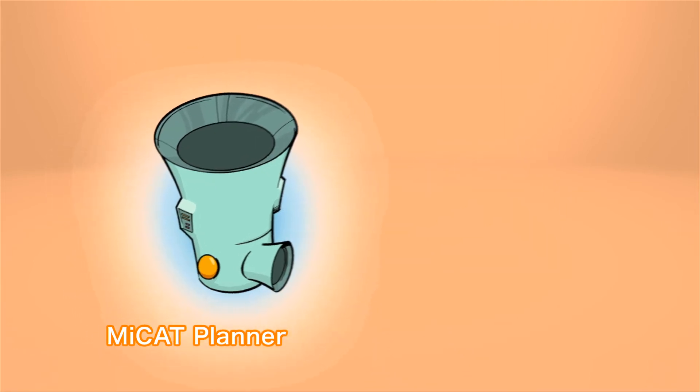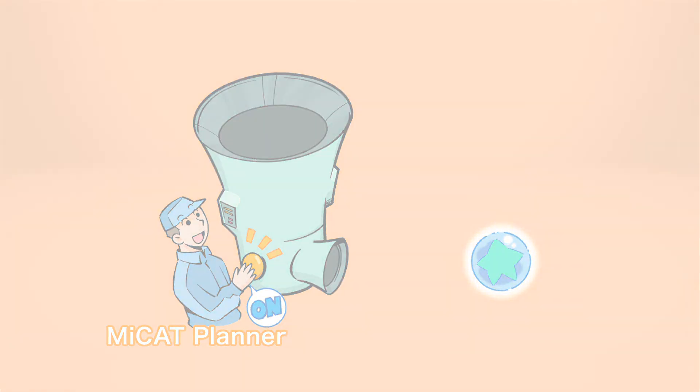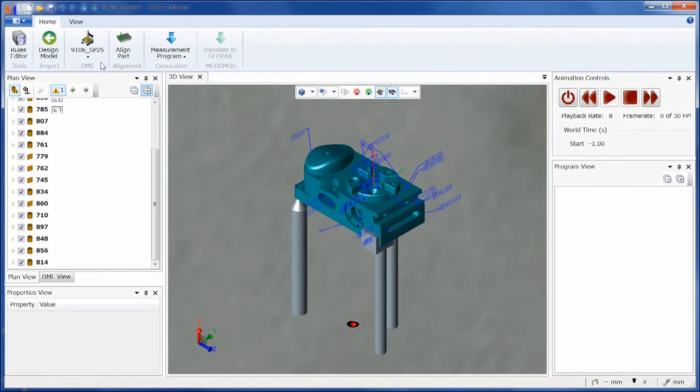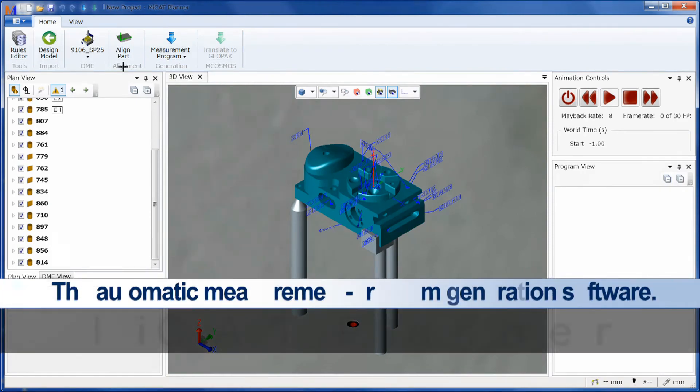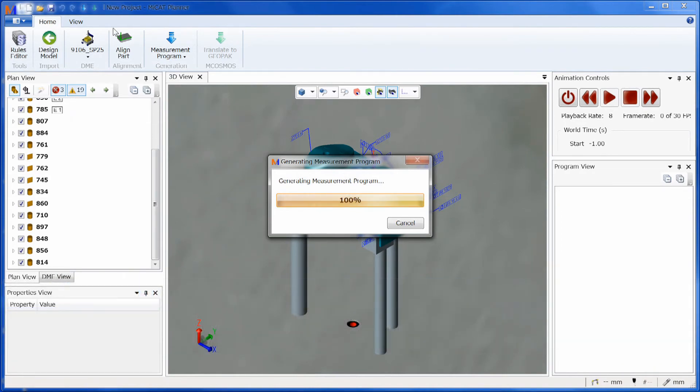The optimal measurement program is automatically generated with only three pieces of information and one click. The MyCat Planner by Mitsutoyo is a software solution that automatically generates measurement programs with only one click.